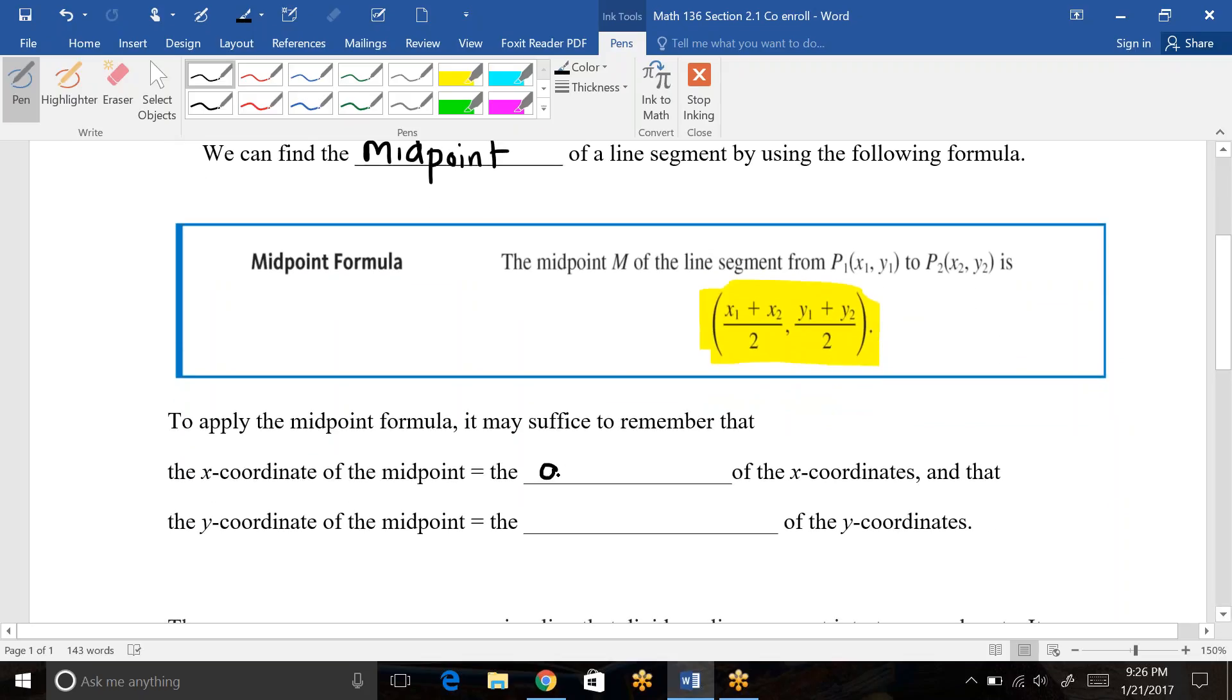So that is what these blanks would say. Average of the x coordinates to find the x coordinate of the midpoint and the average of the y coordinates to find the midpoint y value.